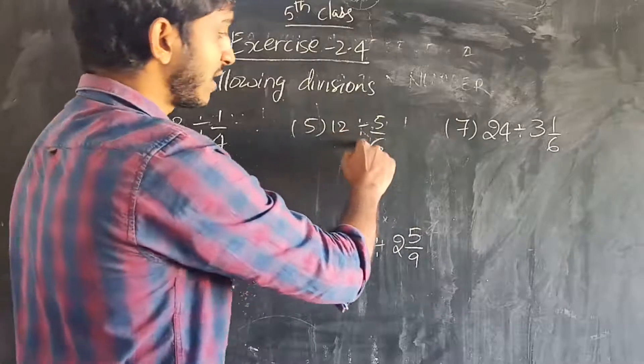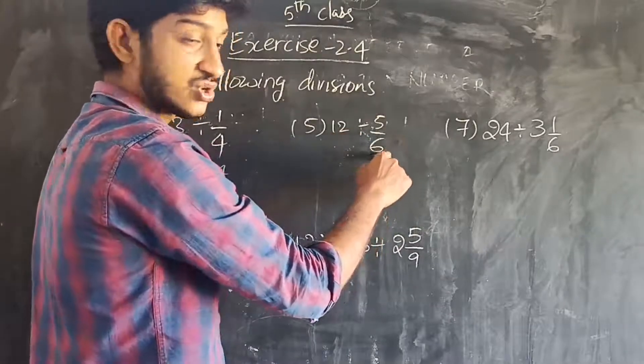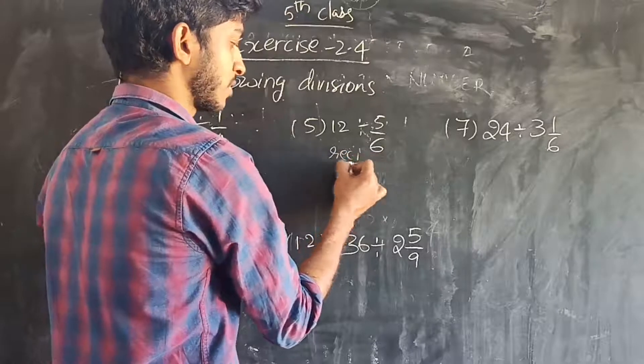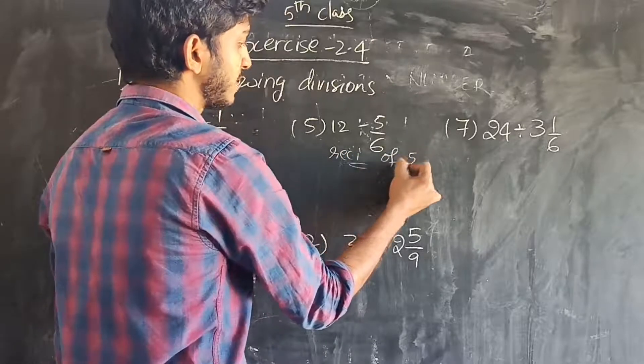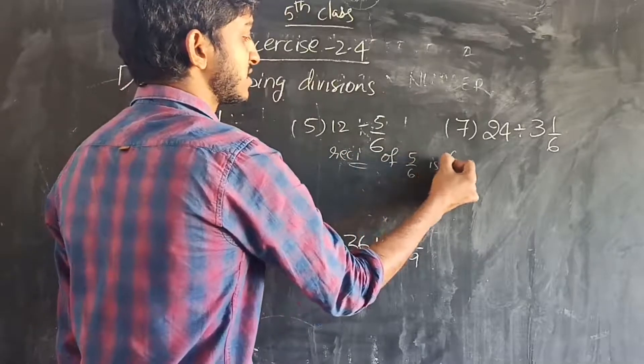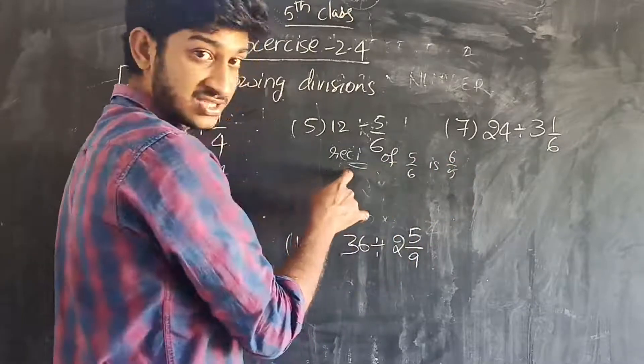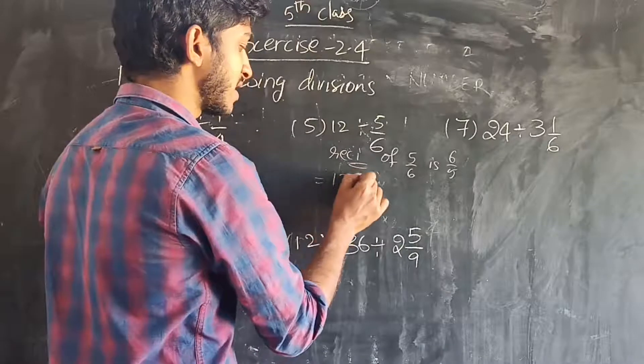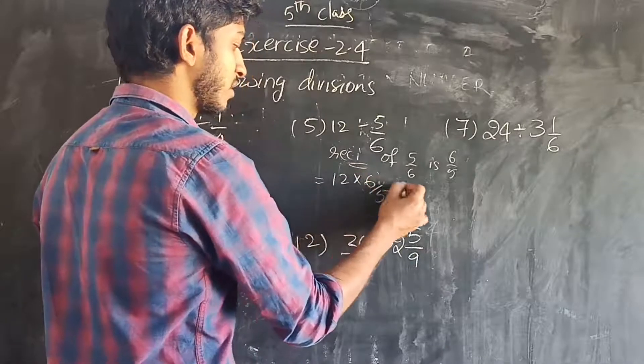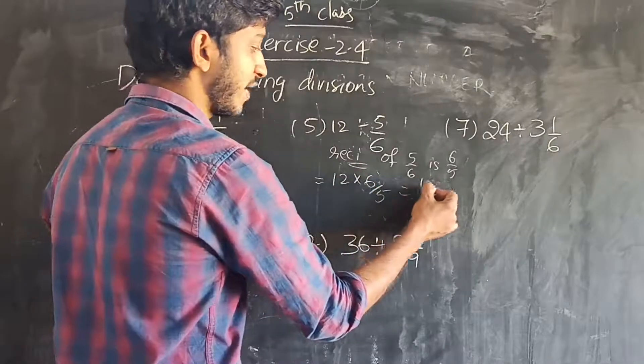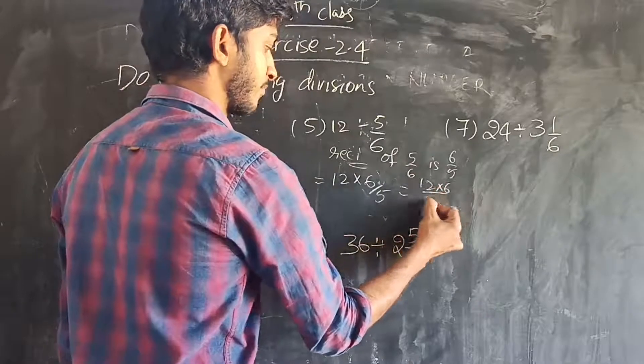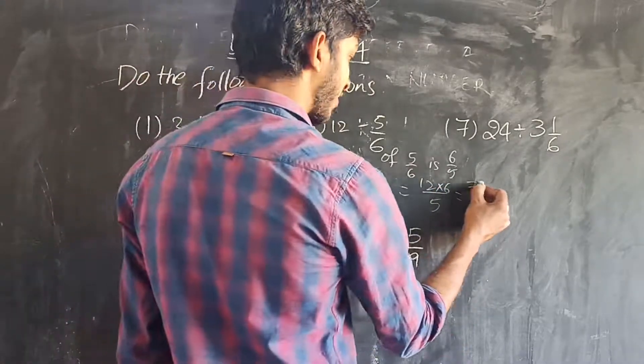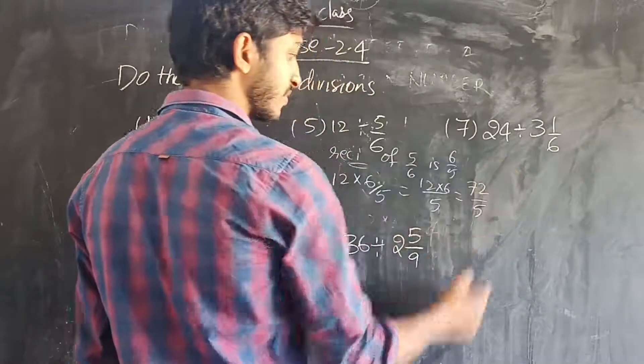See here, 12 divided by 5 by 6. So 5 by 6's reciprocal is 6 by 5. You can certainly know reciprocal. So multiply 6 by 5 into 12, that is equal to 12 into 6 by 5. 12 sixes are 72. 72 by 5 is the answer.